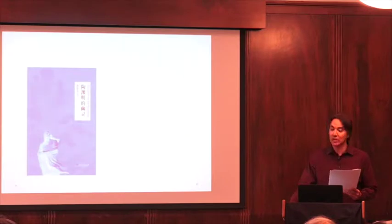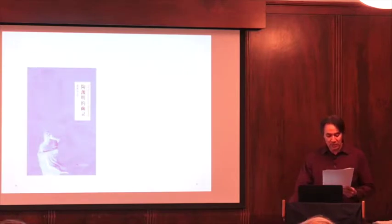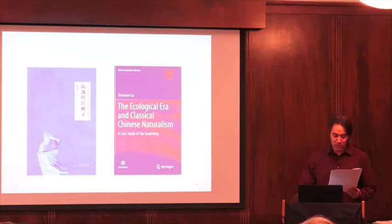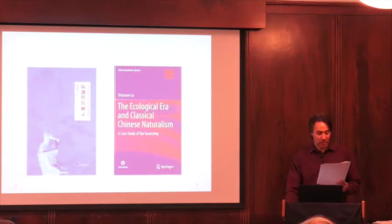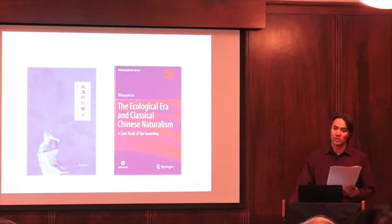Derrida's book argues for the lingering relevance of Karl Marx in our contemporary world. Lu's book was awarded the Lu Xun Prize for literature in 2014. The English title of the book is different from the Chinese. In English, it spells out the contemporary relevance of Tao's thought more explicitly. The title is The Ecological Era in Classical Chinese Naturalism: A Case Study of Tao Yuanming. And as you can guess, the book uses Tao's work as a specter of sorts to construct an ecological argument relevant for the modern world.